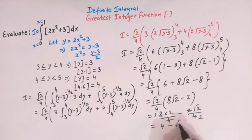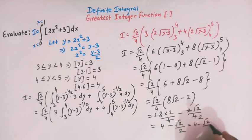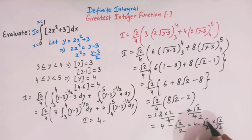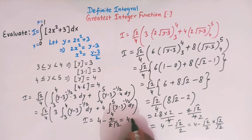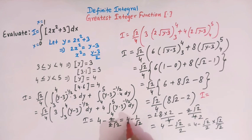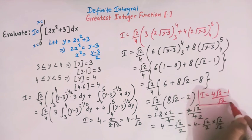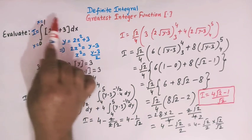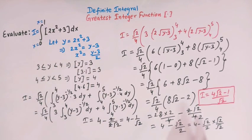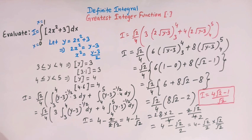Simplifying: I = (√2/4)·(8√2 − 2) = (8·2 − 2√2)/4 = (16 − 2√2)/4 = 4 − √2/2. Rationalizing: 4 − √2/2 = 4 − 1/√2 = (4√2 − 1)/√2. So the value of this definite integral involving the greatest integer function is (4√2 − 1)/√2. This is how we solve this integral.